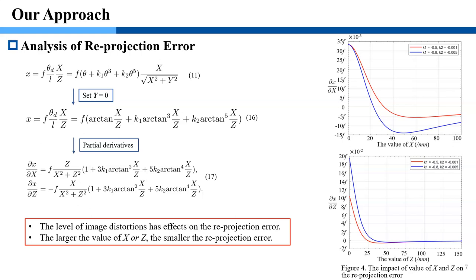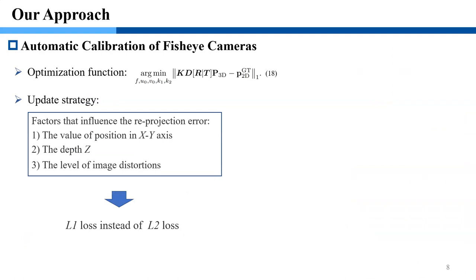The larger the value of X or Z, the smaller reprojection error. Based on this analysis, we determine the optimization function, that is equation 18. Then, we give details of the update strategy.